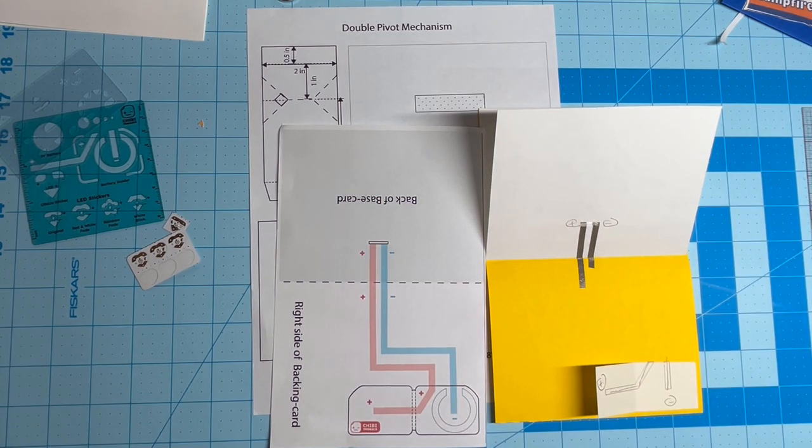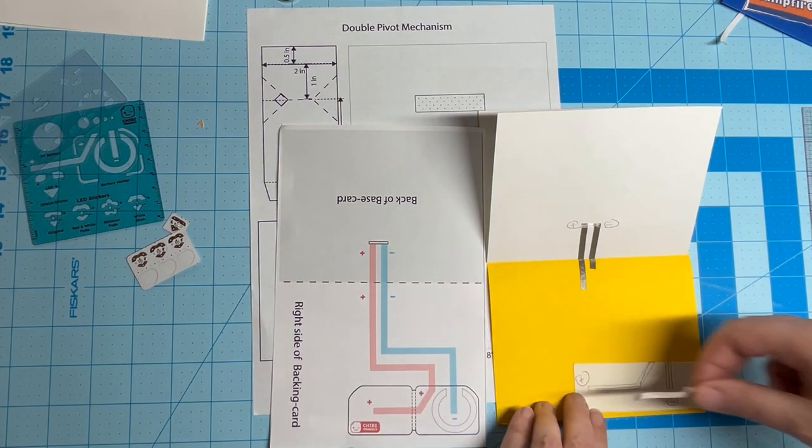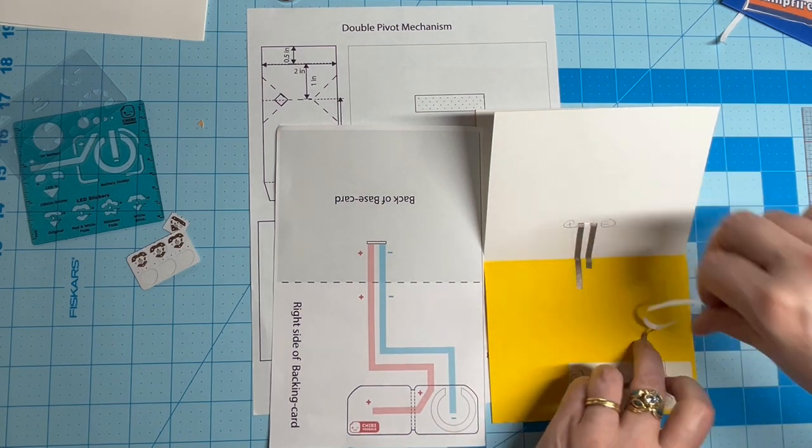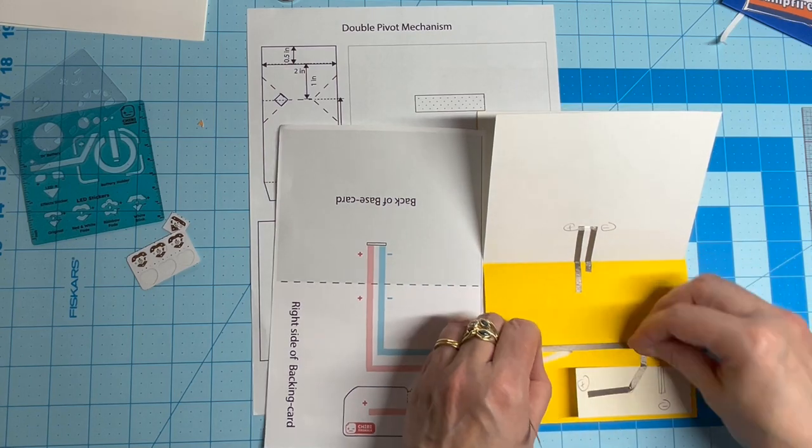Complete the circuit with conductive fabric tape. Use the circuit diagram as a guide and keep the traces parallel where depicted to prevent a short circuit when the card is folded.